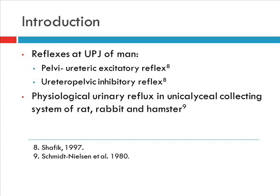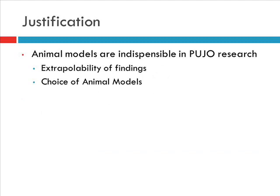I decided: is there any structural difference in this junction between a multicollecting and a unicollecting kidney? Carrying out a study to see whether there are any structural differences will inform us whether these animal models are truly representative, and whether we can extrapolate findings from these smaller mammals to multicollecting systems.